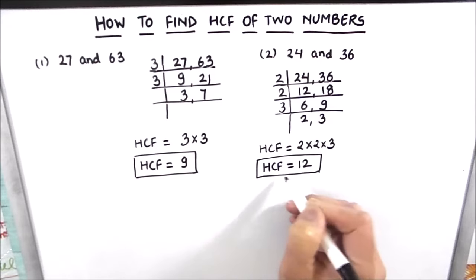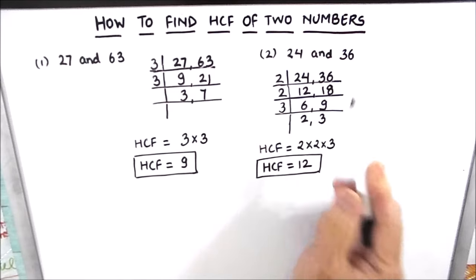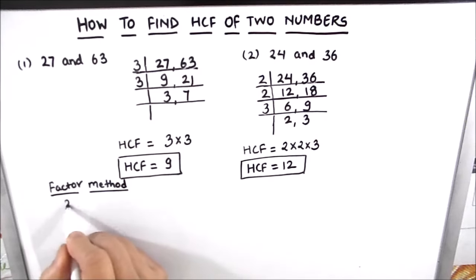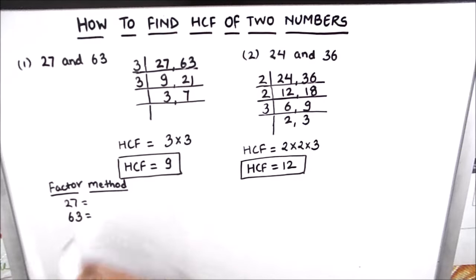It is the highest common factor which divides both numbers fully. There is one more method we can use to find the HCF, called the factor method, where we write the factors of both numbers separately and then find the common factor. Let us solve these two examples with the factor method.